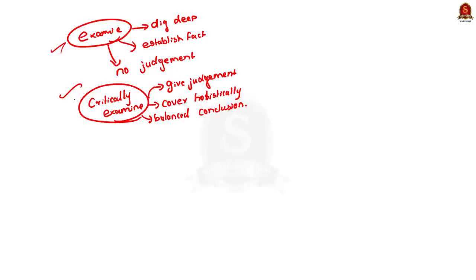The answer for this question must have a good introduction, some positives regarding the interlinking of rivers, some negatives, and finally in the conclusion part you should arrive at a judgment. In the conclusion, you can support or oppose interlinking of rivers based on your discretion, but my opinion is to take a middle path. This should be the general structure of the answer.